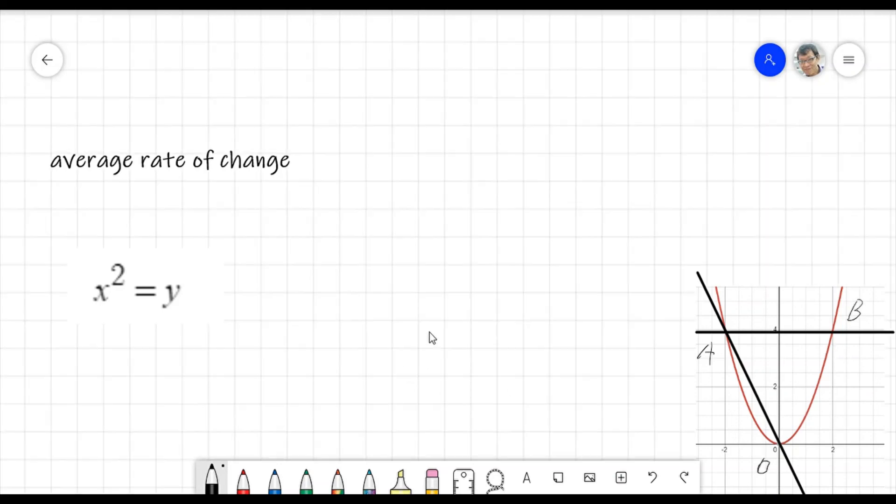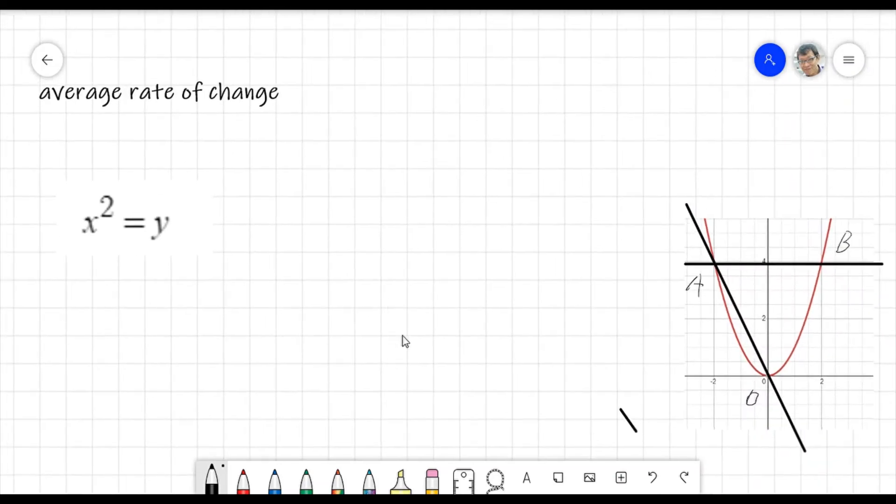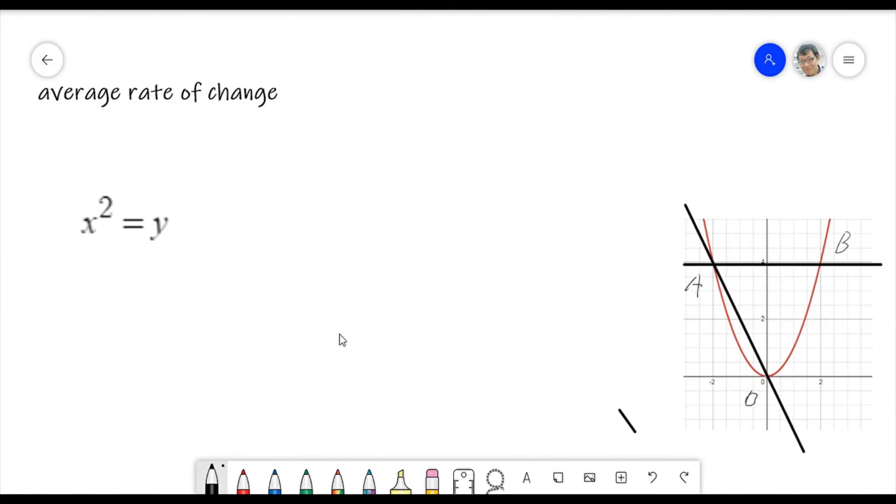If I based on this equation of a parabola, X square equals Y, I cannot say the average rate of change or slope is what. It cannot. But I can say for AO, the slope of AO, this I can say.